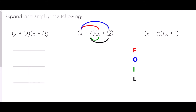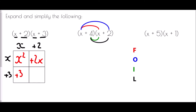You'll have seen the grid method if you've watched the video on expanding a single bracket. To use it, we take each of the elements of the original question and place them on the outside of the grid. So we've got x and plus two, and x and plus three. Inside, we multiply them together: x times x is x squared, x times plus two is plus two x, x times plus three is plus three x, and plus three times plus two is plus six.